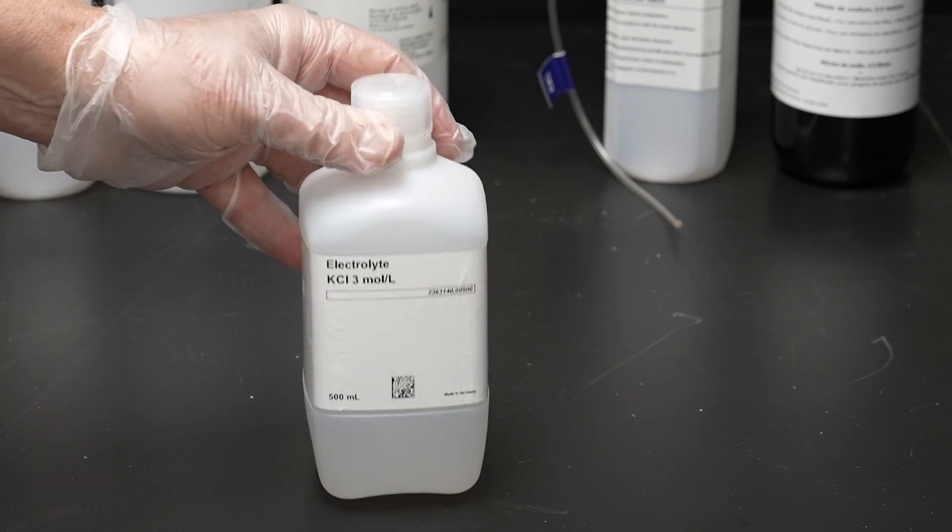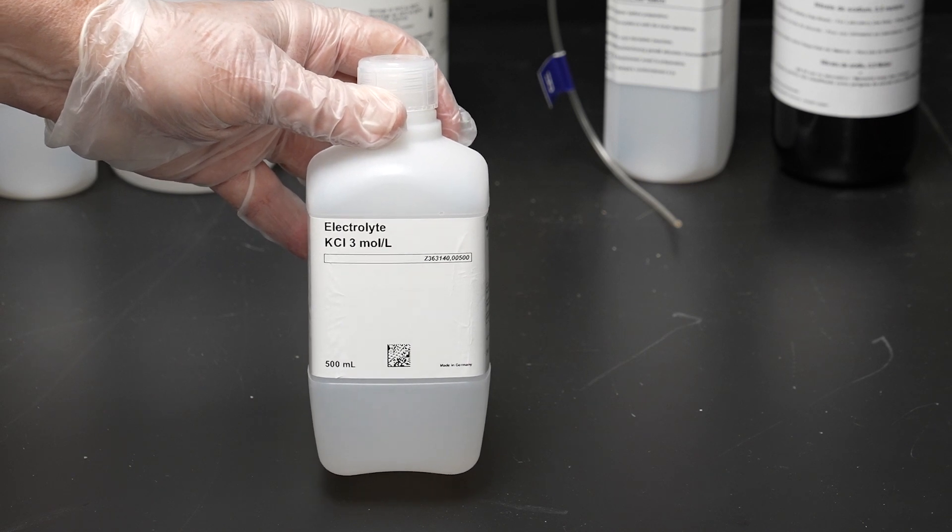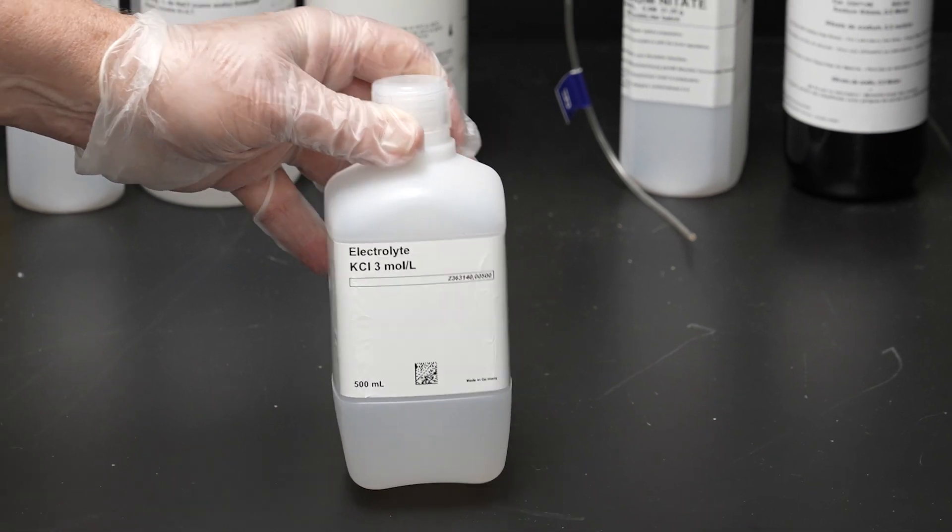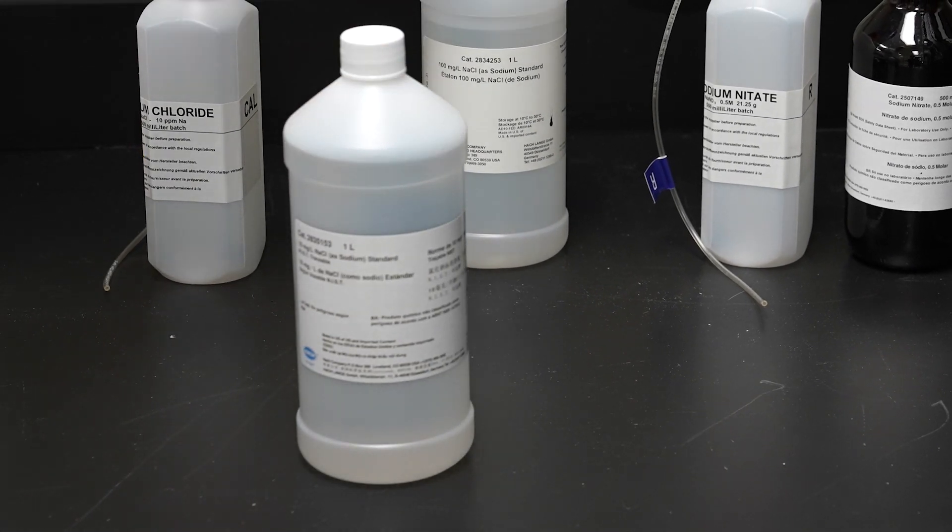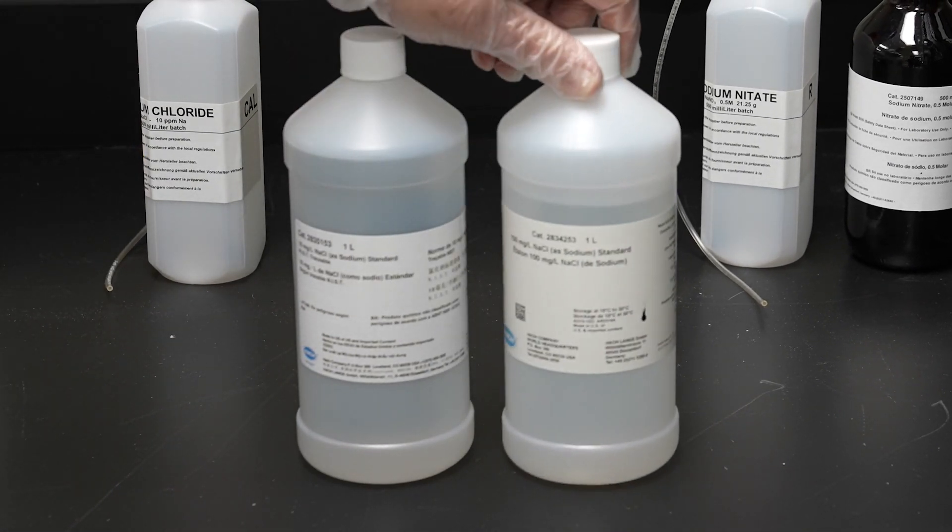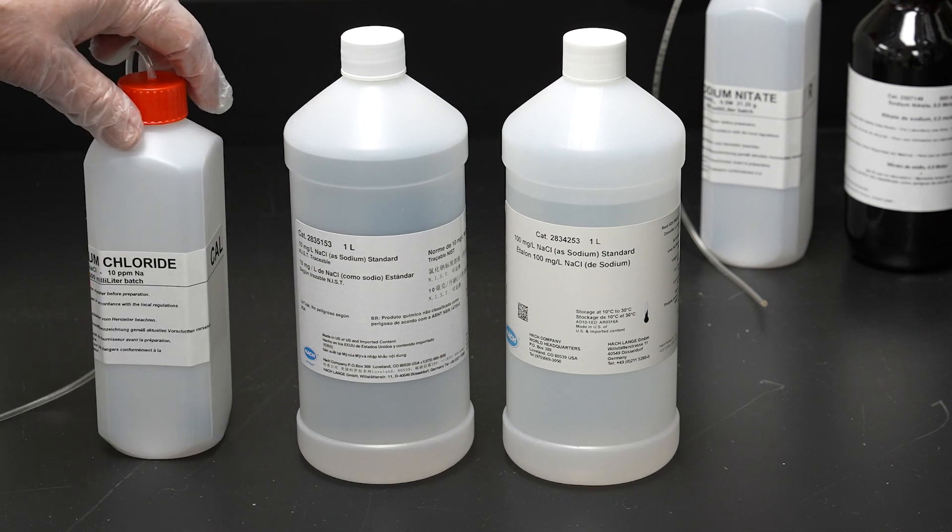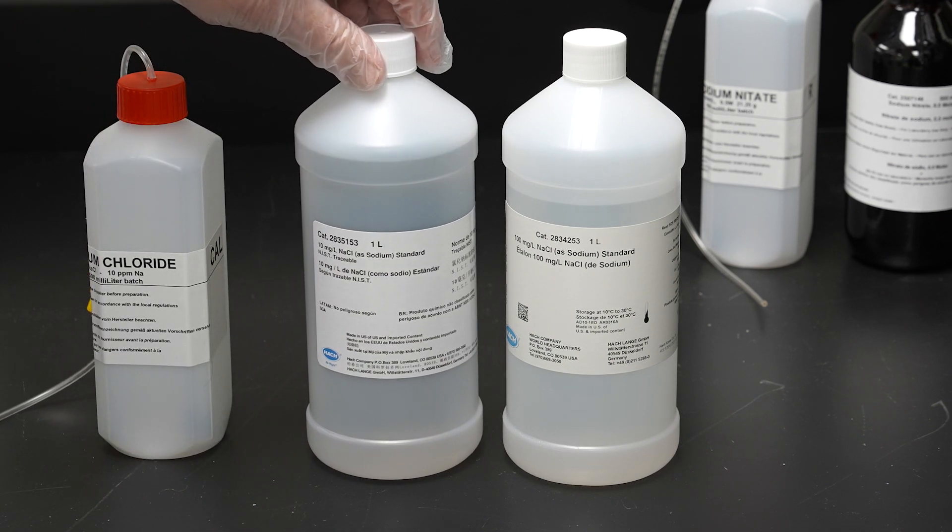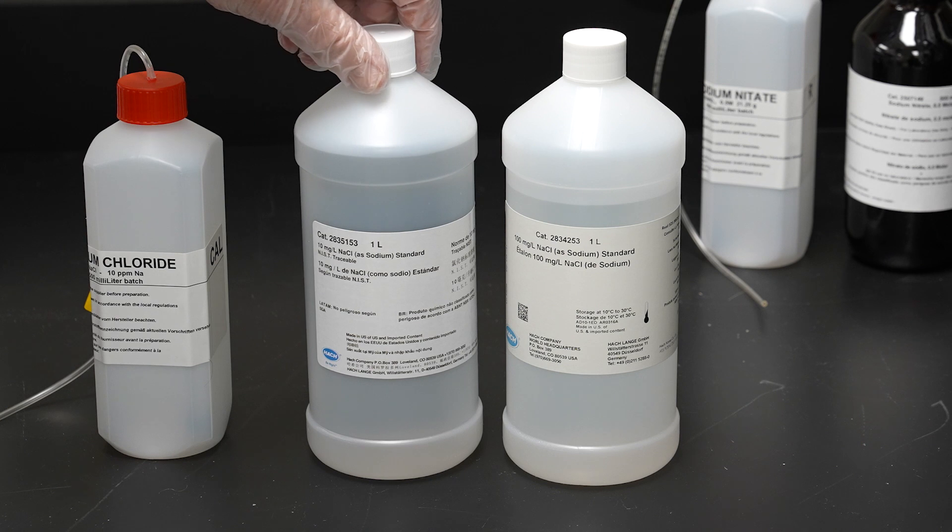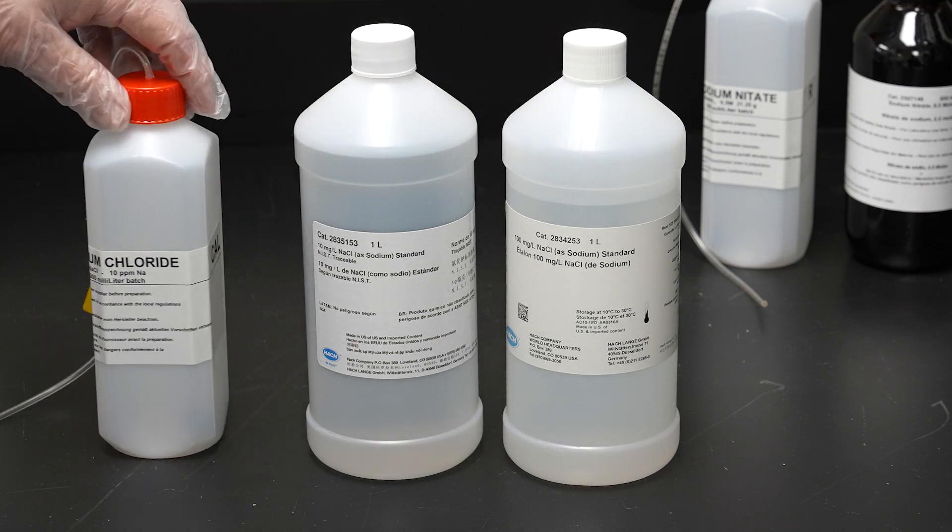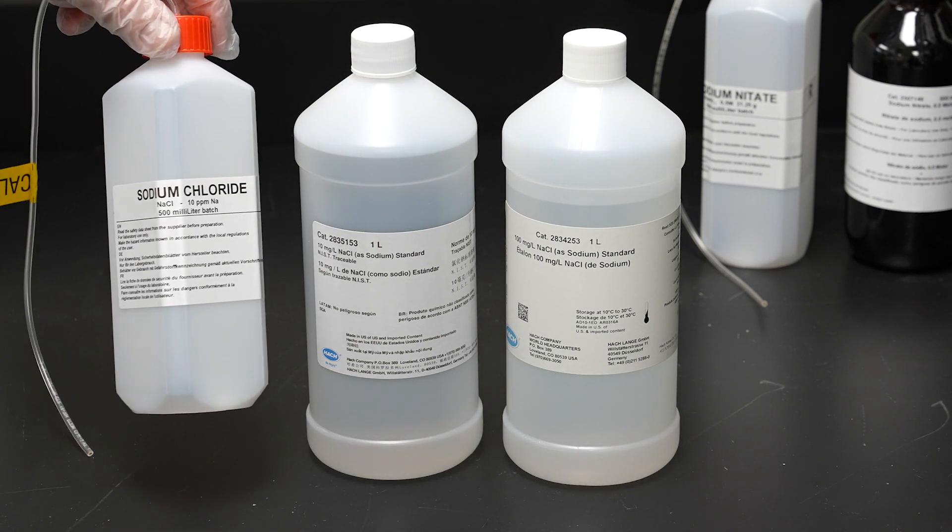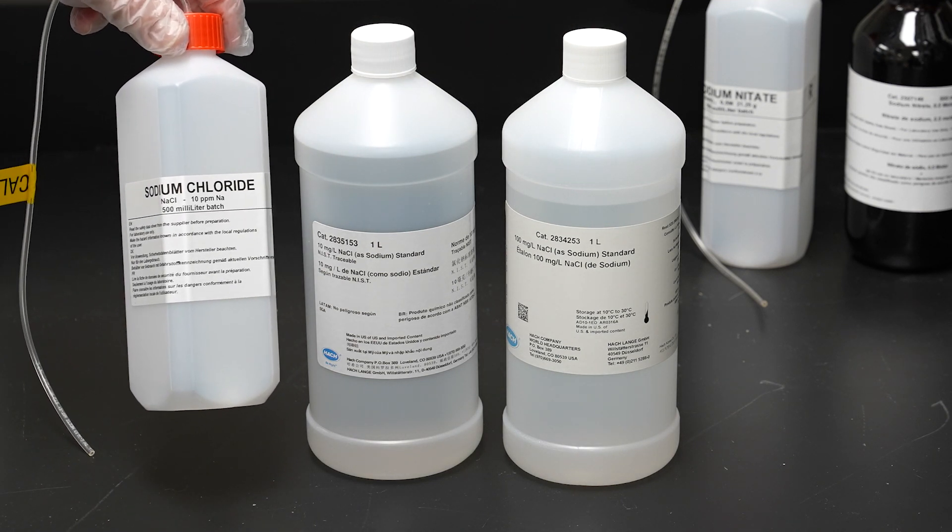The first is the potassium chloride used for the reference electrode. The second for calibration there's actually a choice of a 10 milligram per liter standard and a 100 milligram per liter standard. For ultra pure water you're probably going to use the 10 milligram per liter standard for calibration but for higher levels of sodium the 100.